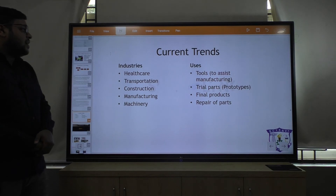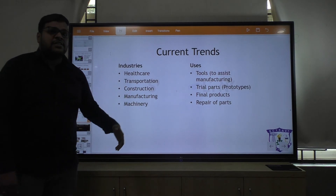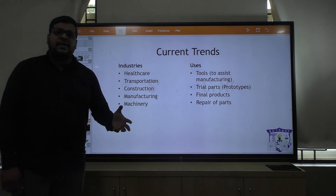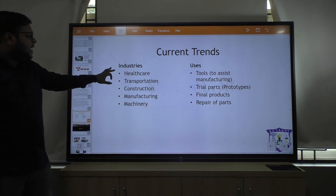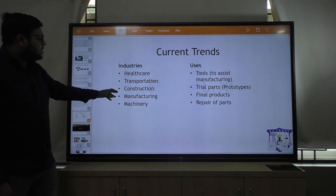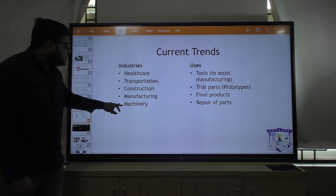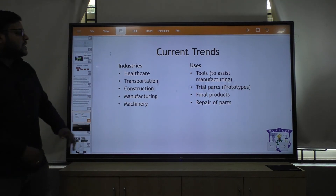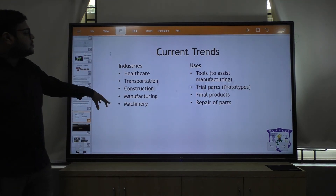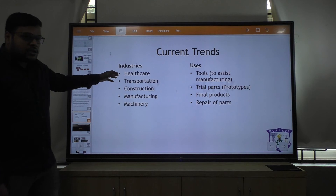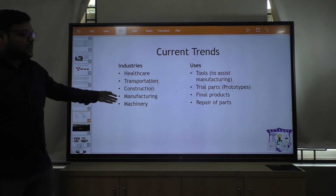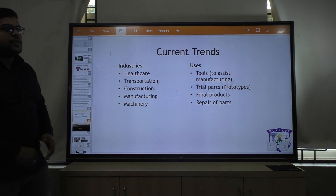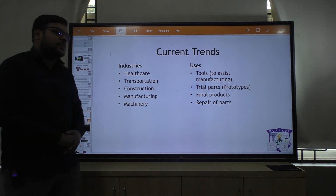Now, what are the current trends — where is additive manufacturing or 3D printing used? Basically, these are used in healthcare, transportation, construction, manufacturing, and machinery. These are the sectors where 3D printing machines are applied.